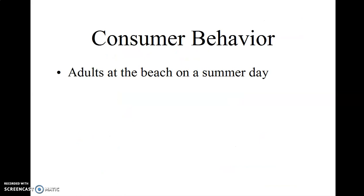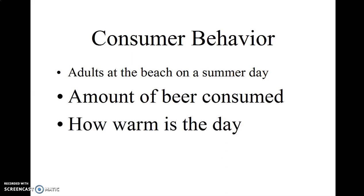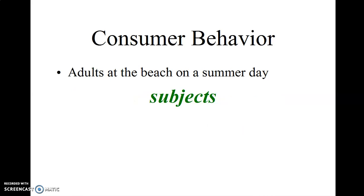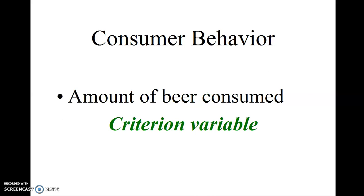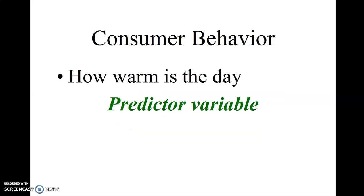Let's take a look at this example from consumer behavior. Let's look at adults on the beach on a summer day. Let's look at the amount of beer consumed and also note how warm is the day. The adults at the beach on a summer day would be the subjects. The amount of beer consumed, well, that's the criterion variable. It's a measure of decision, preference, or performance. How warm the day is would also be a predictor variable, unless it's the same temperature every day, in which case it would be a constant.